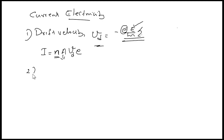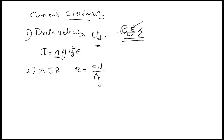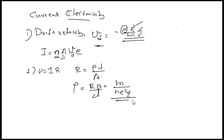Now, Ohm's law equation: V = IR. Resistance R = ρL/A. We can also write ρ = RA/L. In terms of relaxation time, resistance can be represented as R = m/(ne²τ). For specific resistance: ρ = RA/L = m/(ne²τ). This equation is also important for specific resistance.